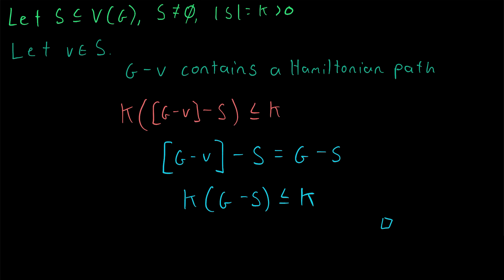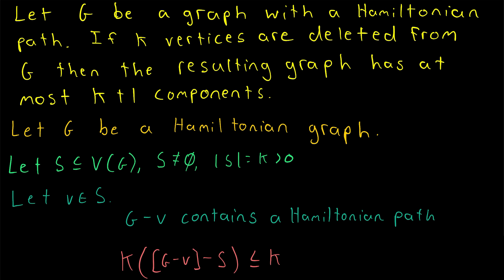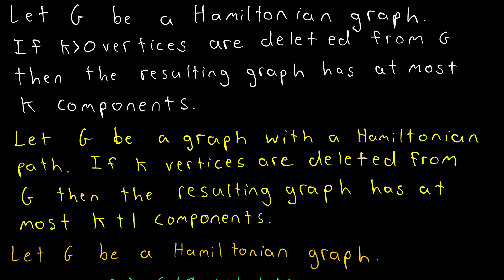That concludes the proof. We've proven that deleting any k vertices from a Hamiltonian graph results in a graph with at most k components. I hope this video helped you understand how to prove this necessary condition for Hamiltonian graphs. I'll leave links in the description to other proofs about Hamiltonian graphs. Let me know in the comments if you have any questions or video requests. Thank you for watching — subscribe for the swankiest math lessons on the internet.